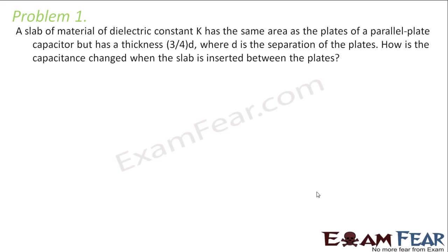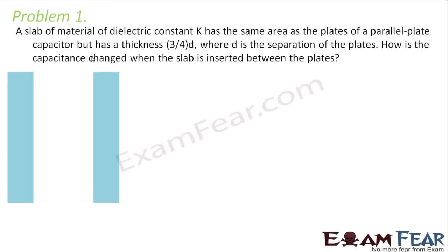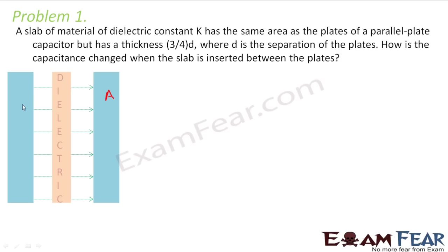It asks: a slab of material of dielectric constant K has the same area as the plates of a parallel plate capacitor. This parallel plate capacitor has a slab of dielectric constant K which has the same area as that of the plates — that means if the plates have area A, this slab also has area A but has a thickness of 3/4 of the distance D between the plates. How is the capacitance changed when the slab is inserted between the plates?